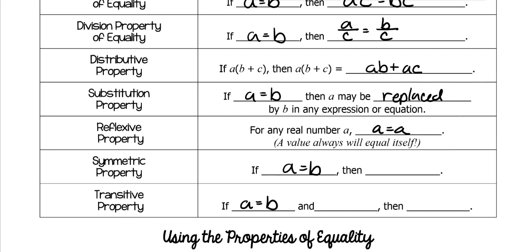The symmetric property just means that you flip it back around the other way. So what that means is, when you're solving an algebraic equation, if you ever end up with something like 7 equals x, we all know in algebra that's okay. But whenever you're doing algebra proofs, it needs to be turned back around. Whenever you do turn it back around, you're using the symmetric property — you can flip-flop it across the equal sign.